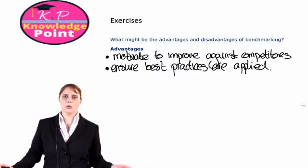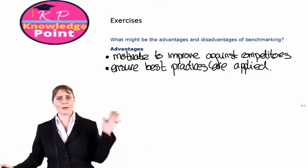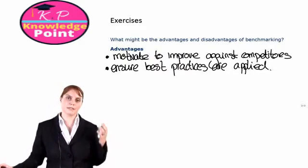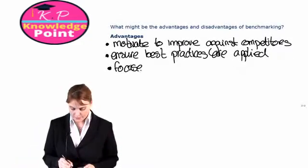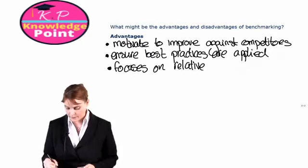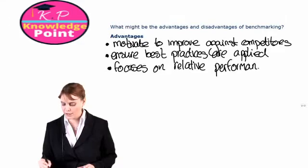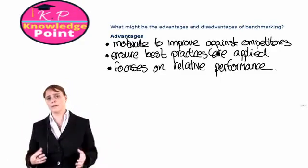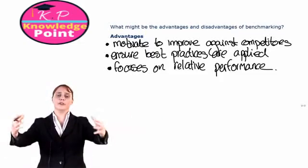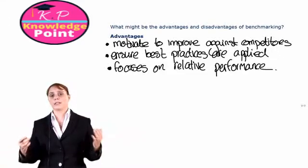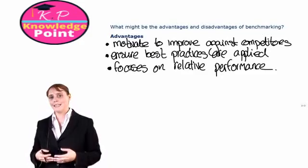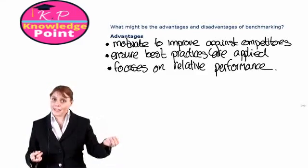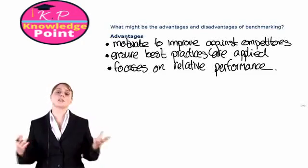For example, if we do process or activity benchmarking, we might discover that a different company has a far better way of running a particular process, which we can then apply to improve the performance of our own company. Benchmarking also focuses on relative performance, which may improve motivation. Instead of viewing a division as a stand-alone entity, we take a wider view. If our sales have gone down, that may not necessarily indicate poor performance — benchmarking against competitors may reveal their sales also declined due to factors outside our control.